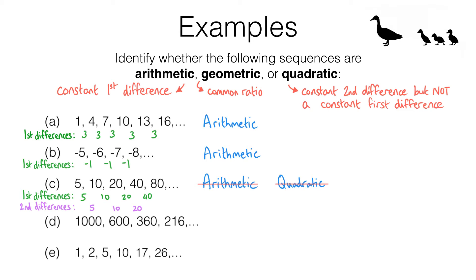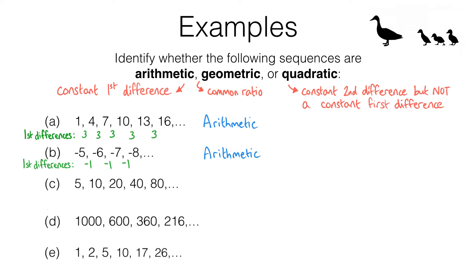So let's check that it is a geometric sequence. A geometric sequence must have a common ratio — that means to go from one term to the next we keep multiplying or dividing by the same amount each time. For this sequence, you can hopefully see very quickly that what we are doing to go from one term to the next is multiplying by 2. That means we have a common ratio of 2, so this is a geometric sequence.